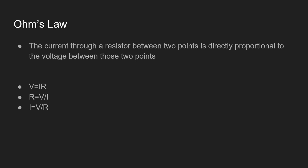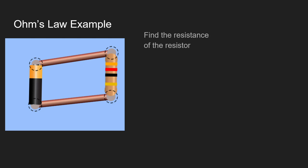So as you can see on the screen we have V equals IR which is the first one that I stated. We have R equals V over I which is resistance equals the voltage divided by the current. And lastly we have I equals V over R which is current equals the voltage divided by the resistance.